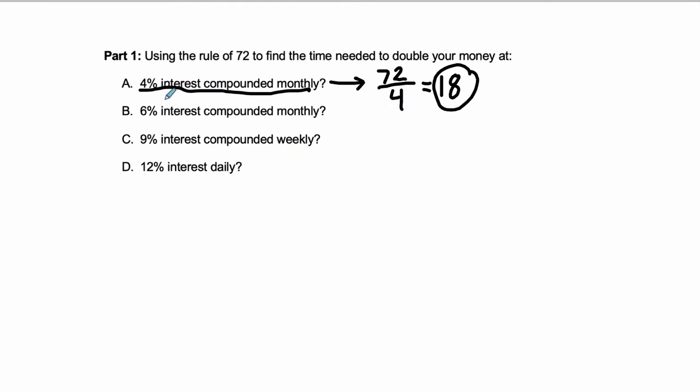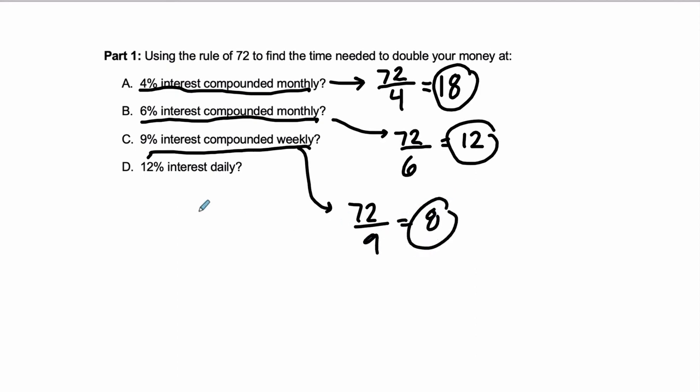That's the idea. With the 6% interest compounded monthly, it's going to take how long? It's going to take 72 divided by 6, which is 12 years. And then for 9%, it's going to take 72 divided by 9, which is 8 years. And then finally, the 12% is going to tell you 72 divided by 12 is 6. Now, notice,